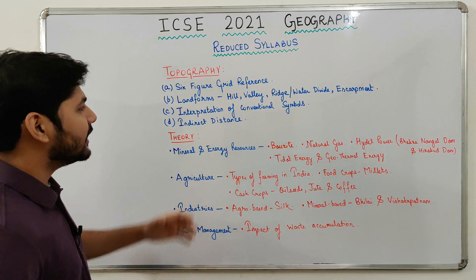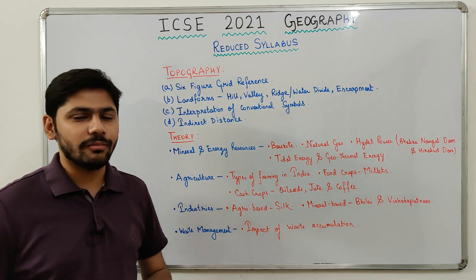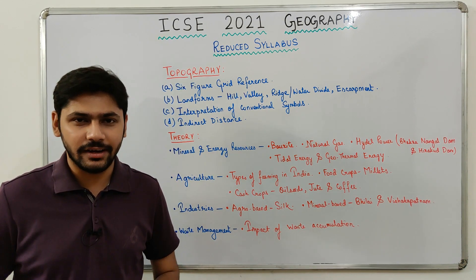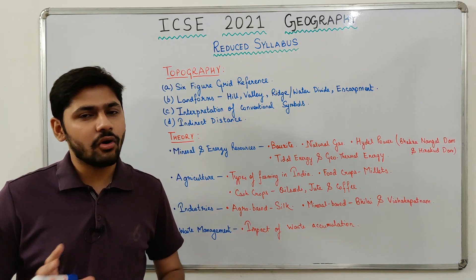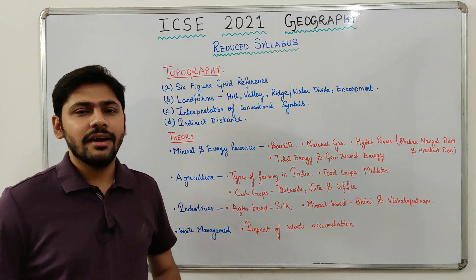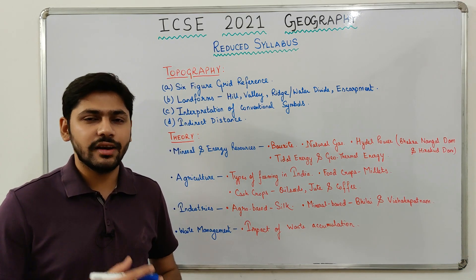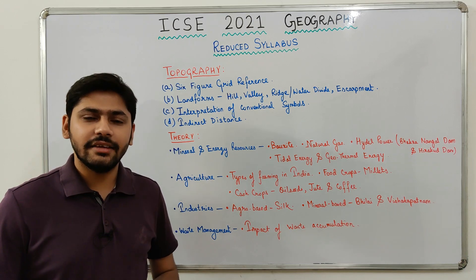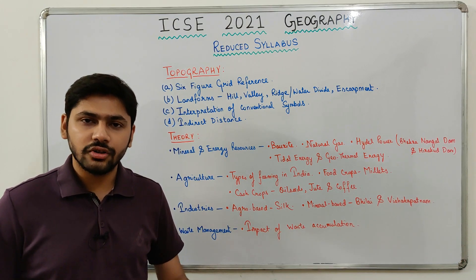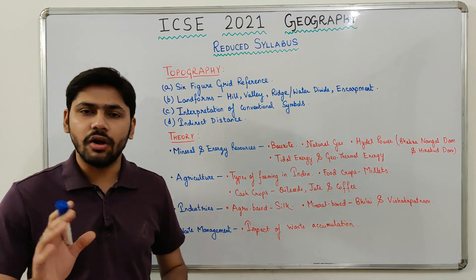Third, interpretation of conventional symbols has been removed. However, I don't know why, because for the majority of things you need to know what the symbols signify. My suggestion is that you learn all the symbols and do not skip studying conventional symbols, because for drainage patterns, identifying types of settlements, types of communication, transport, manmade features, and natural features — you need to know the symbols.